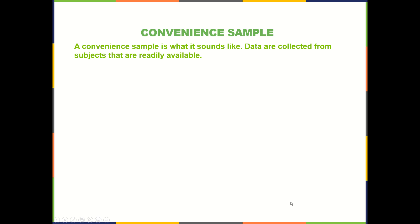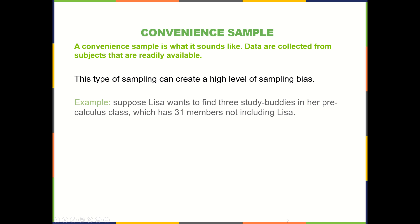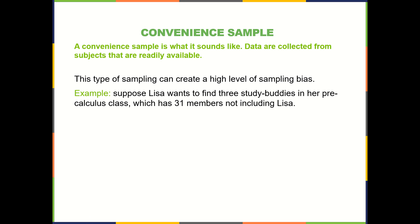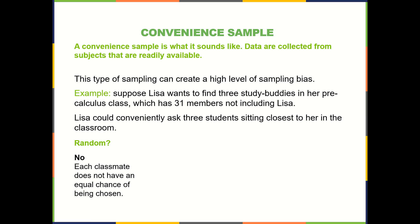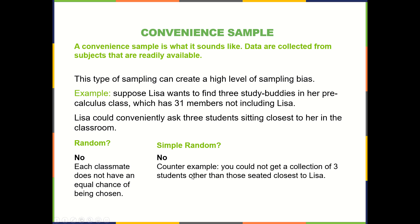Finally we have the convenience sample. It is what it sounds like — it's not random. It's just data collected from subjects that are readily available. Going back to the example about Lisa: instead of doing a simple random sample, what if she just asked the three students sitting closest to her in the classroom? Why is it not random? Classmates sitting farther away have no chance of being chosen while those sitting close to her have a high chance. You could not get a collection of three students other than those seated closest to Lisa.